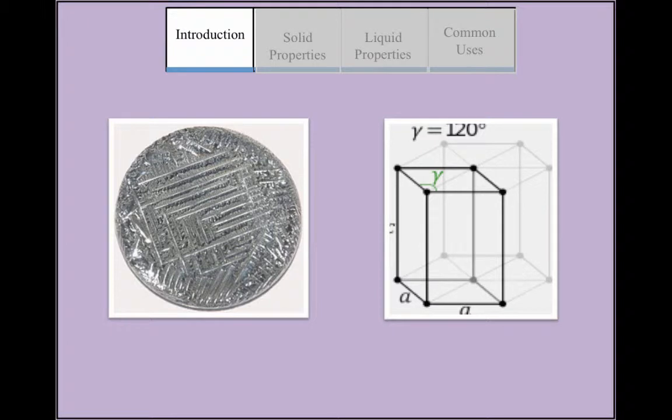Tellurium is the 52nd element on the periodic table. Tellurium is a brittle, mildly toxic, rare silver-white metalloid which looks similar to tin and is chemically related to selenium and sulfur.